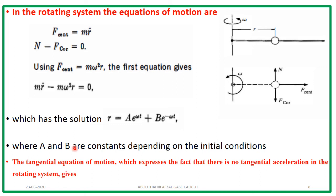Equating the forces, the centrifugal force along the radial direction gives mR̈, and along the y-direction the net force is zero since the Coriolis force produces no acceleration there, so the normal reaction minus the Coriolis force equals zero. The centrifugal force is mω²R, so the equation of motion becomes R̈ − ω²R = 0. Solving this second-order differential equation gives the solution R = Ae^(ωt) + Be^(−ωt), where constants A and B depend on initial conditions.